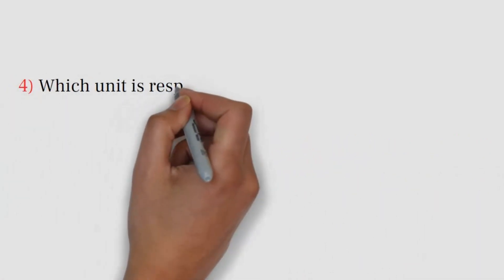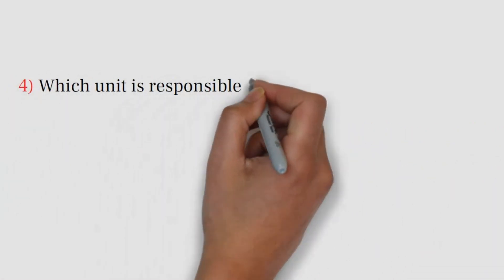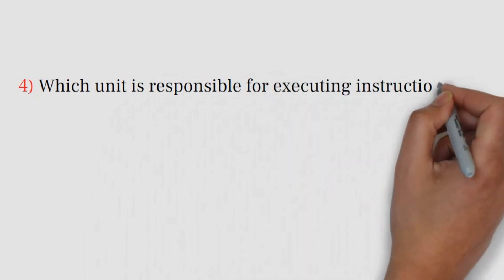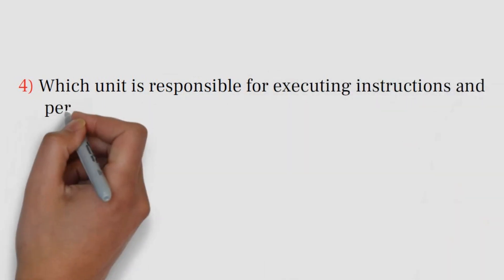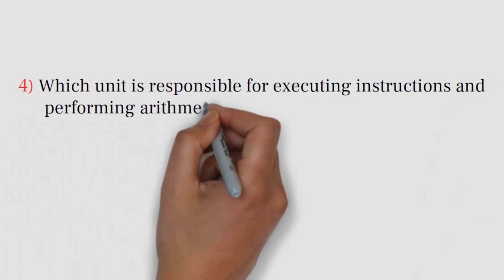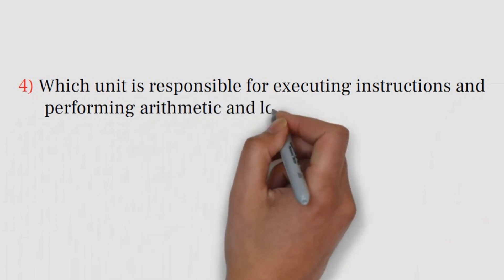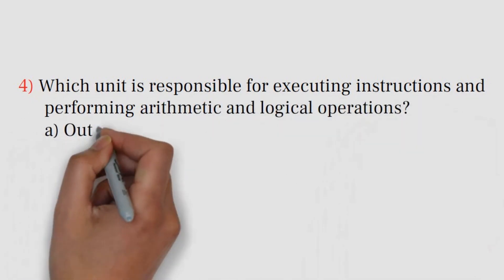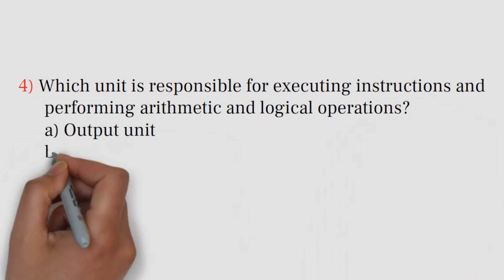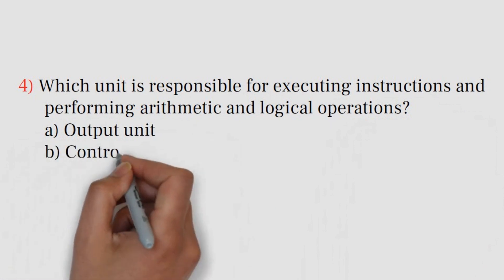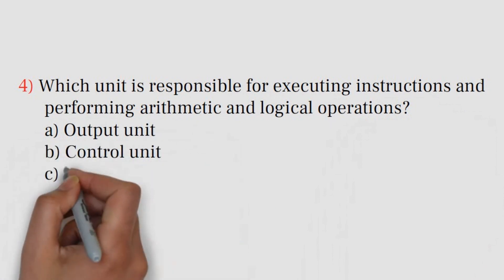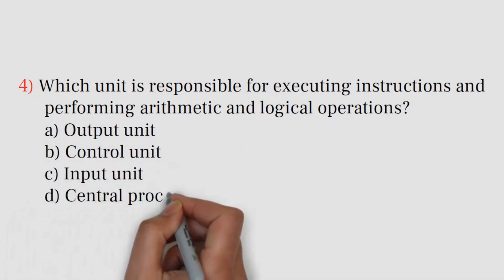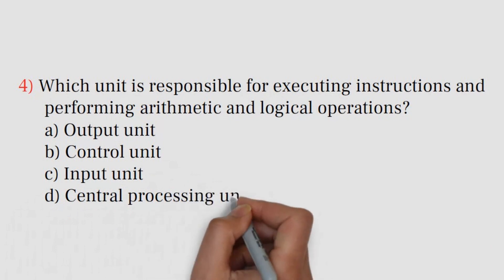Question number 4. Which unit is responsible for executing instructions and performing arithmetic and logical operations? A. Output unit. B. Control unit. C. Input unit. D. Central processing unit.